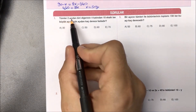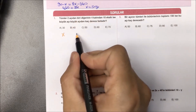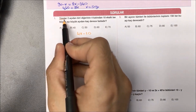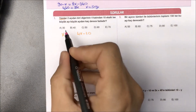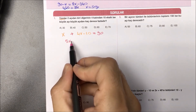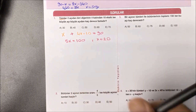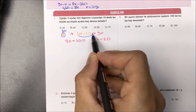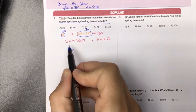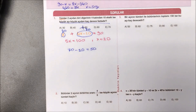Birinci sorumuzda tümler iki açıdan biri diğerinin 4 katından 10 eksik demiş. Bir tanesini X dersek diğeri 4X eksi 10 şeklinde yazmamız gerekiyor. Bunlar nasıl iki açı? Tümler. Tümler iki açının toplamının 90 derece olduğunu biliyoruz. X ile 4X eksi 10'u toplarsak 5X eksi 10 eşittir 90; 10'u karşı atarsak 100; her iki tarafı 5'e bölersek X buradan 20 gelir. Büyük açı küçük açıdan kaç fazladır? Büyük açım 70, küçük açım 20; cevap 50, doğru yanıt C seçeneğidir.